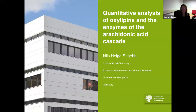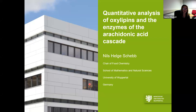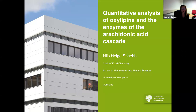Nils studied food chemistry and toxicology in Münster and Karlsruhe. After receiving his PhD in analytical chemistry, he was a postdoc at the University of California, Davis, and then a scientist at the University of Veterinary Medicine, Hanover. Since 2014, he's chair of food chemistry at the University of Wuppertal in Germany. Nils's team develops and applies instrumental analytical methods to provide quantitative data of metabolites and investigates their role in physiology. He's published more than 130 scientific publications and book chapters.